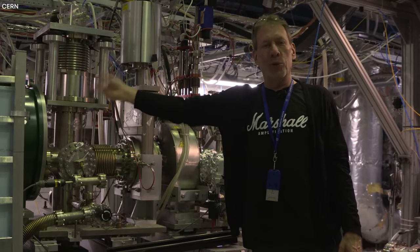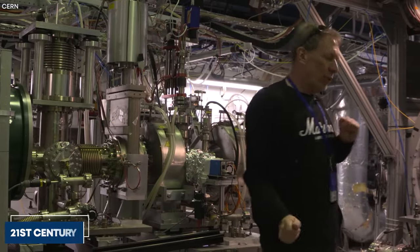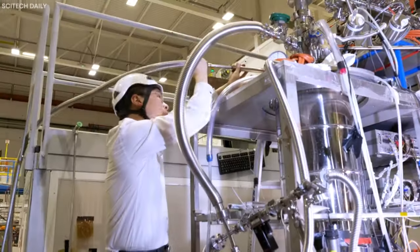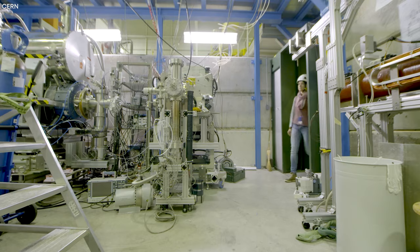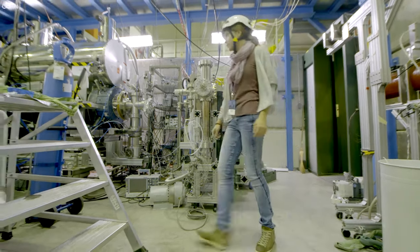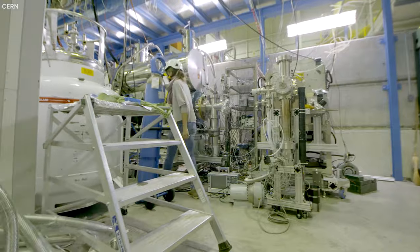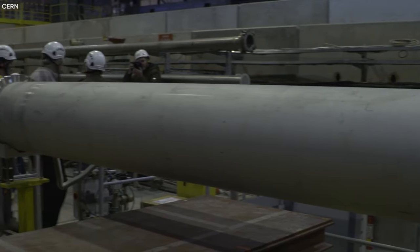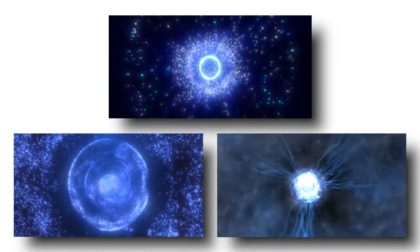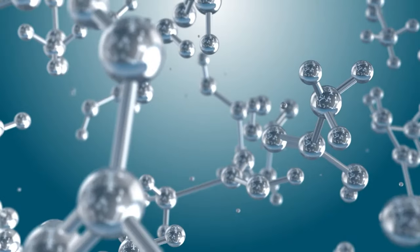CERN's commitment to antimatter research became even more pronounced in the 21st century with the establishment of the Antiproton Decelerator. In 2000, it provided a facility for producing low-energy antiprotons, enabling experiments on antimatter to continue. The AD has been used for various antimatter experiments, including creating and trapping antihydrogen atoms and exploring their properties and behavior.